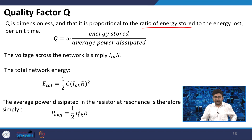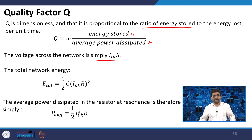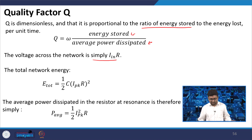Q = ω × (energy stored) / (power dissipated). If we find the quality factor Q, the voltage across the network is simply Iin × R during resonance — only current flows through R.